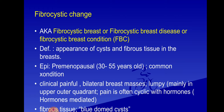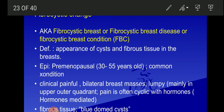Fibrocystic changes are a very common condition in premenopausal women. Clinical presentation is a painful bilateral breast mass — not well-defined, possibly diffuse. Pain is associated with the menstrual cycle. The most common site is the upper outer quadrant. Pain is cyclic with hormonal changes — whenever hormonal changes occur during the menstrual cycle, this leads to pain and a lumpy feeling in the breast.